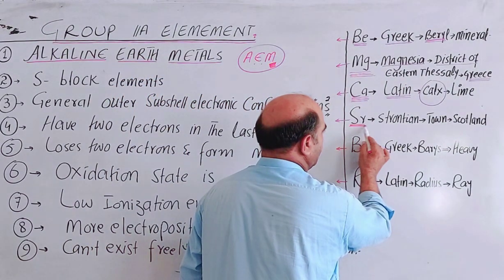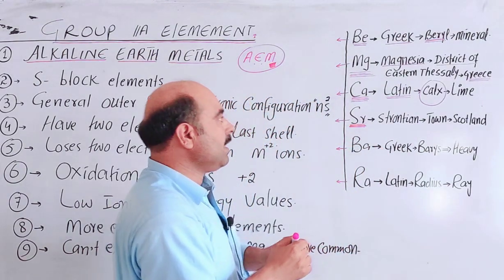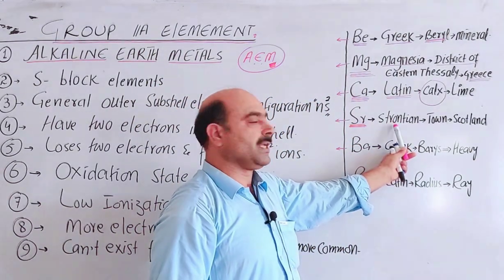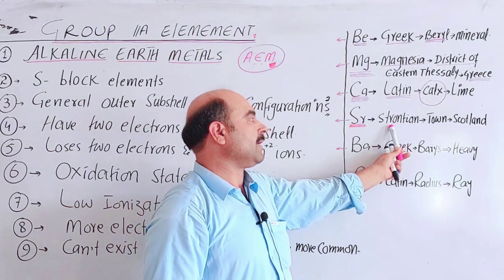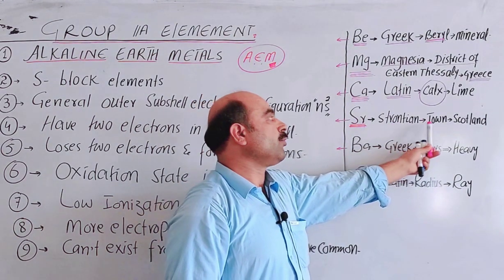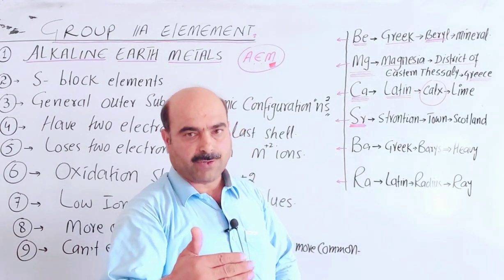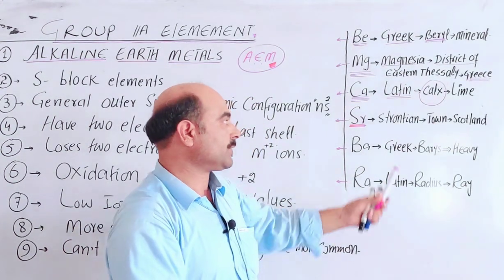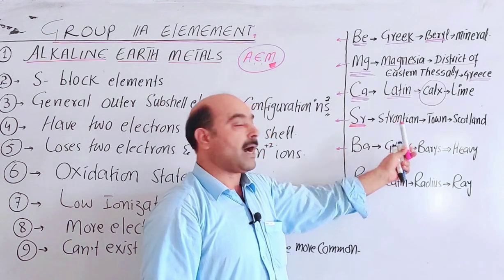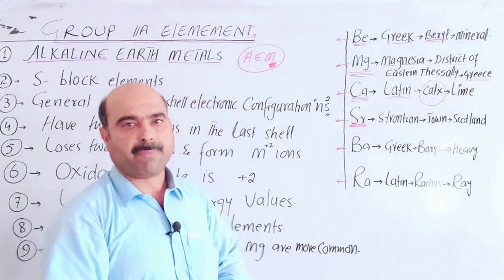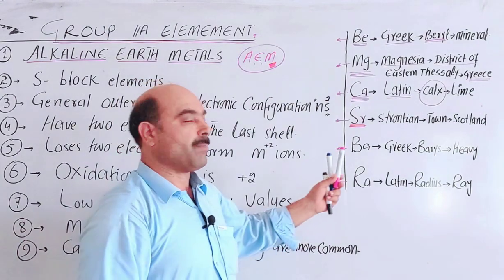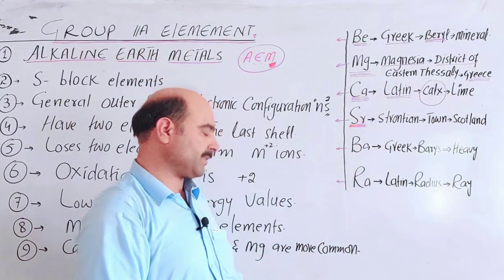Strontium, symbol Sr. Strontium is derived from Strontian, which is a small town in Scotland. Scotland is a country where the small town Strontian is located. The mineral deposits there led to the naming of strontium.